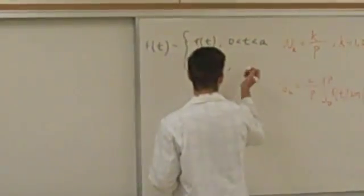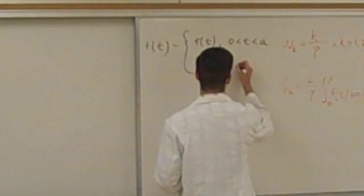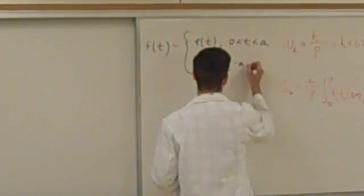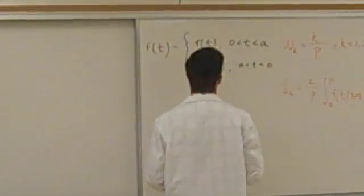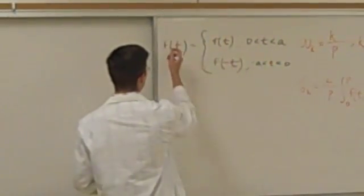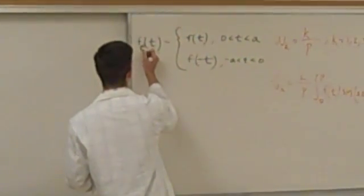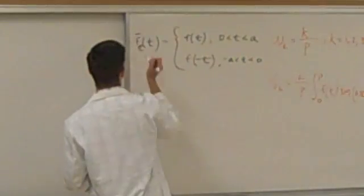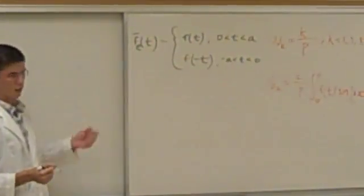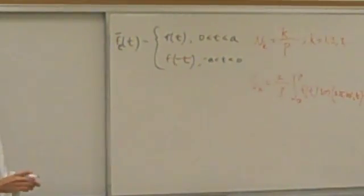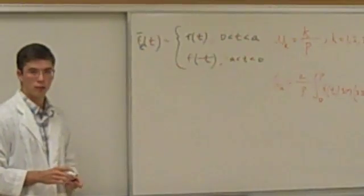This holds on the other side of the y-axis, namely from negative a to 0. And this is the even representation of our function f of t — this is the standard notation for the even representation of a function.